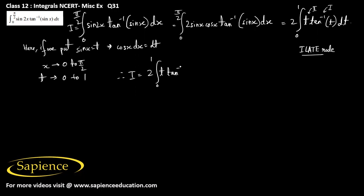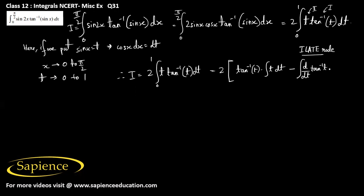So I = 2·∫₀¹ t·tan⁻¹(t) dt. Applying integration by parts: I = 2·[tan⁻¹(t)·∫t dt − ∫(d/dt of tan⁻¹(t))·(∫t dt) dt], evaluated from 0 to 1.